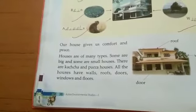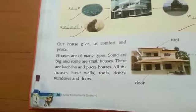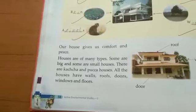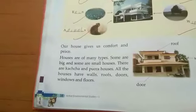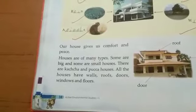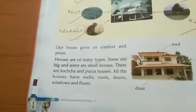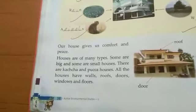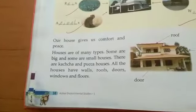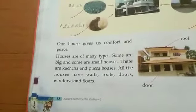Houses are of many types. House ke bohot saare types hote hain, bohot alag alag types ke houses hote hain. Some are big and some are small houses. Koi houses bade bade hote hain, koi houses chote chote hote hain.